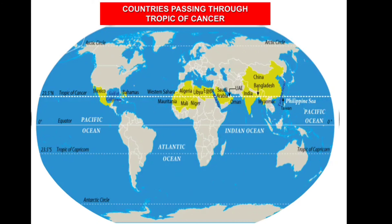As you can see in this map, Africa is the only continent through which the Tropic of Cancer, the Equator, and the Tropic of Capricorn all pass. I hope you found this video informative. Thanks for watching — I will see you in the next one.